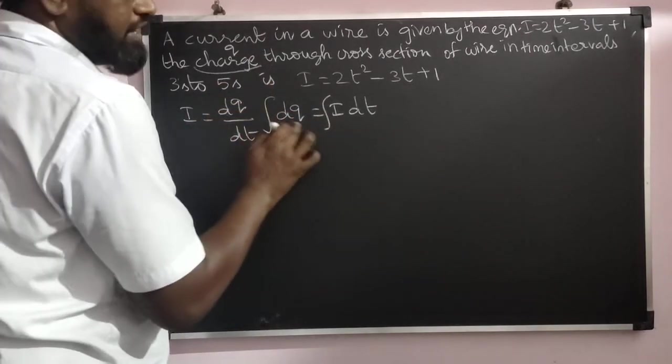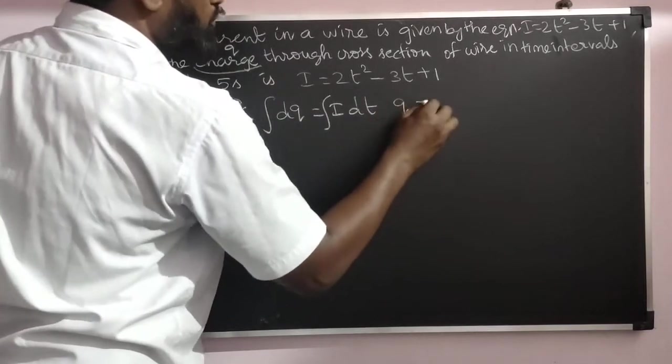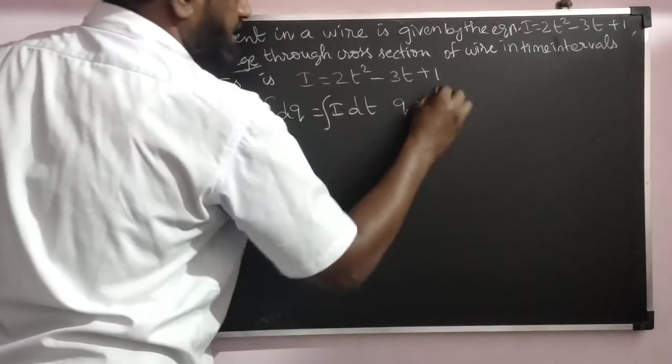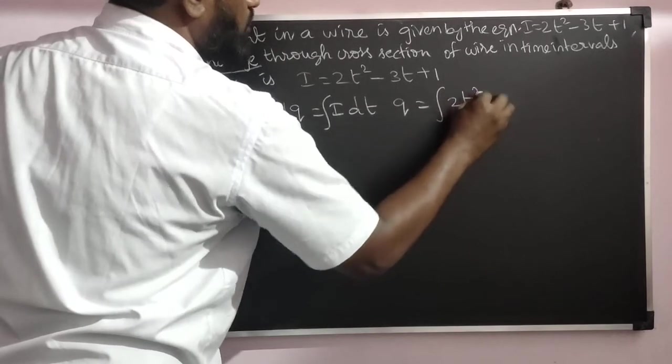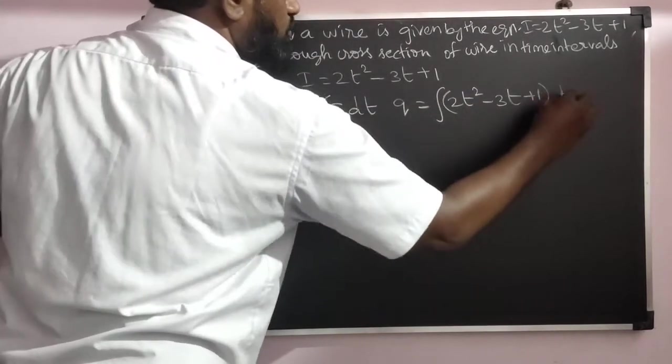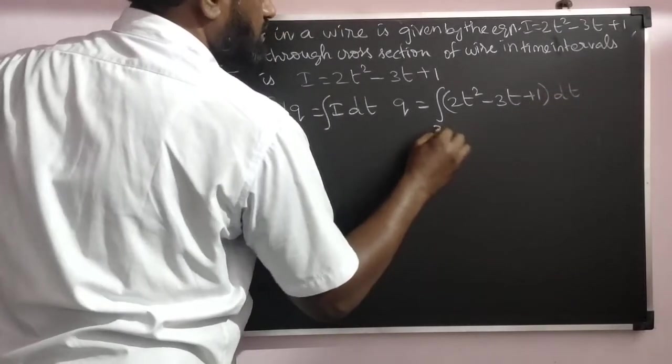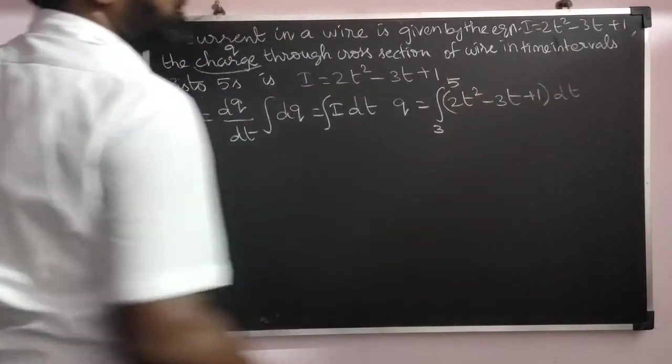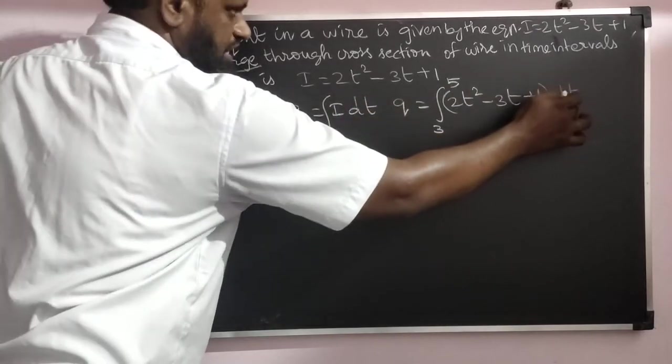So what we can get: ∫dq becomes q. Substitute the value of i here: 2t² - 3t + 1 into dt with the limit of 3 to 5. It's varying with respect to time.